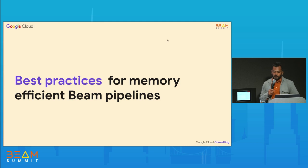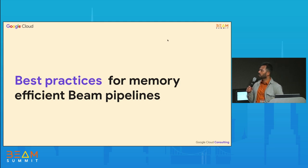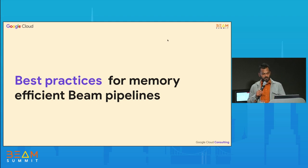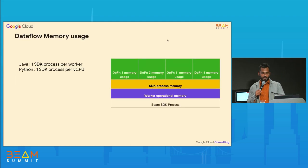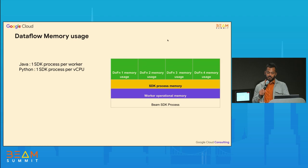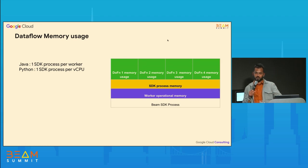In the next few slides, I'll talk about some best practices you can follow to write memory-efficient pipelines. These are things that will affect the yellow and green memory categories. You can't do much about the blue category, but you can make efficient use of available memory in your Beam code.